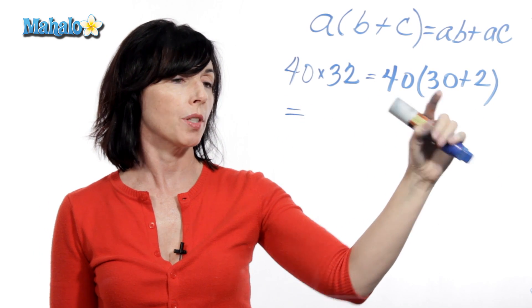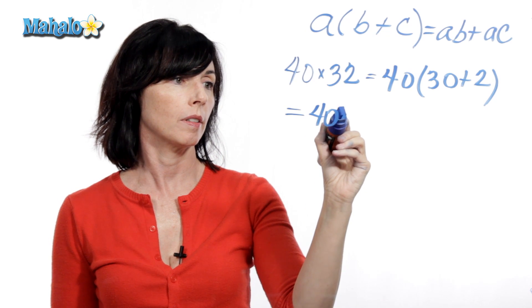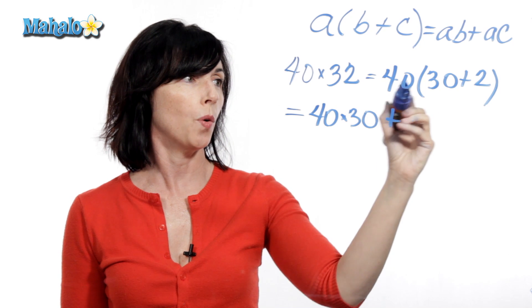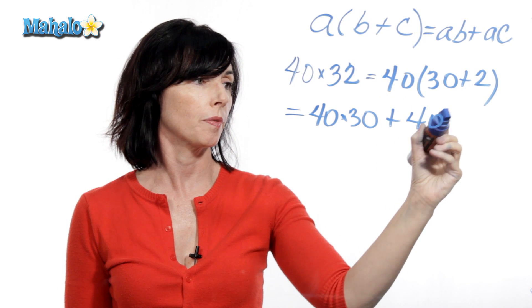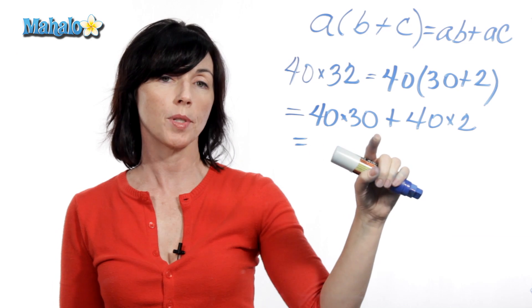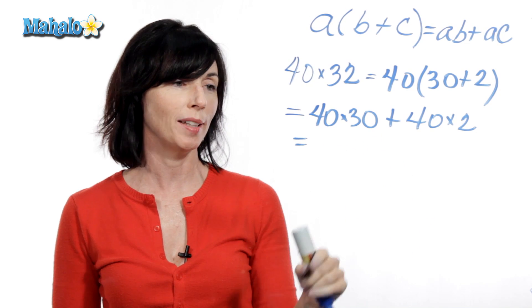40 times 30 plus 40 times 2. 40 times 30 is 1,200, I'll tell you how I know.